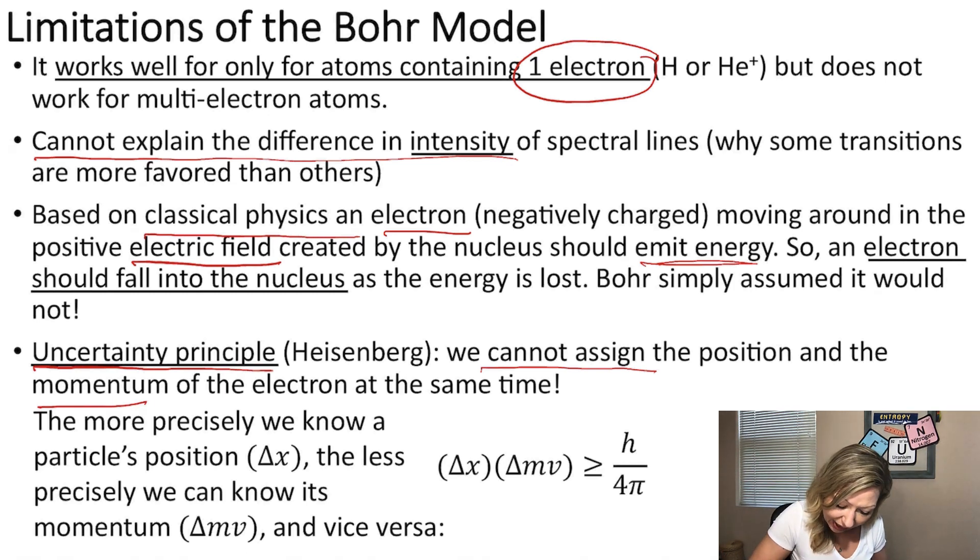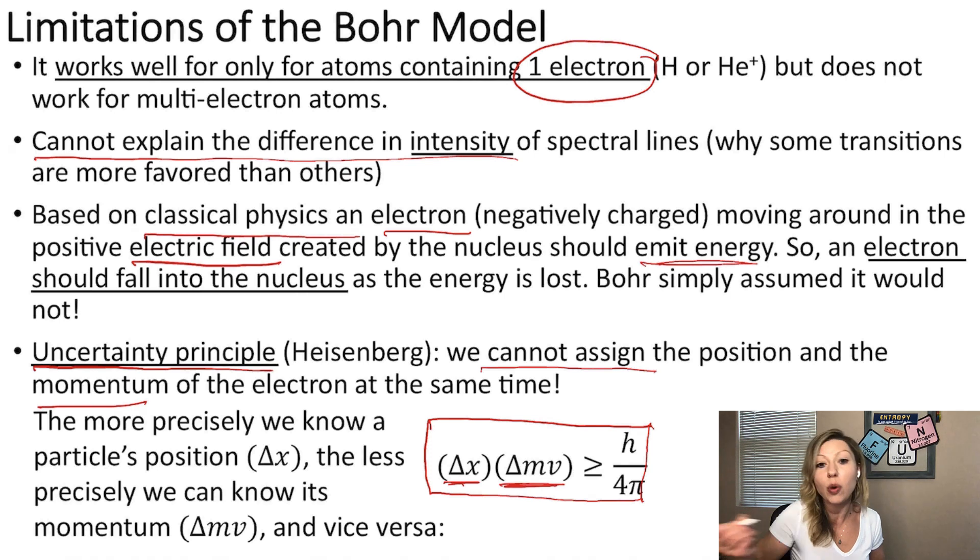And he gave this expression right here. So the change in position multiplied by the change in momentum, you are going to see this sometimes given as delta P. That's the change in momentum, which equals to the mass times the velocity, should be a larger number than H, which is Planck's constant, divided by 4 pi.